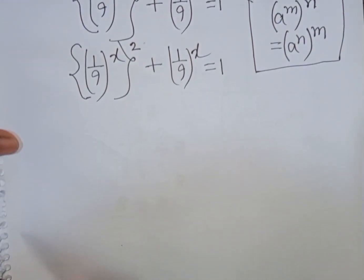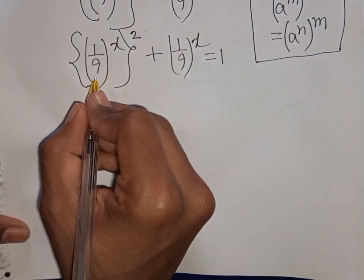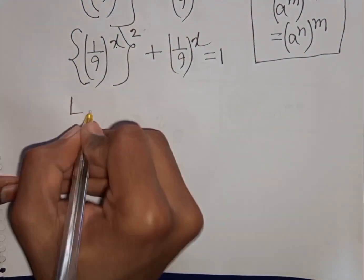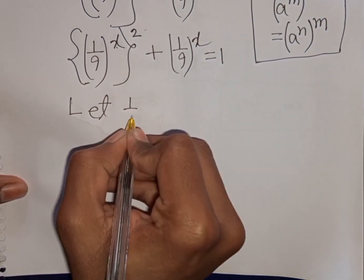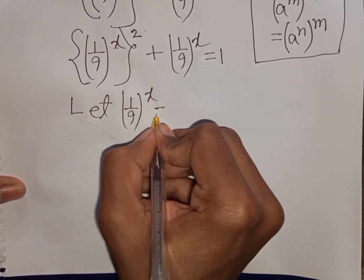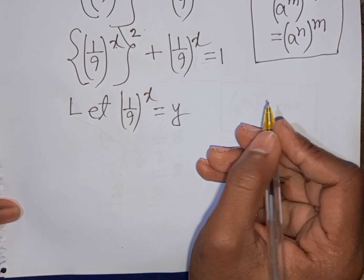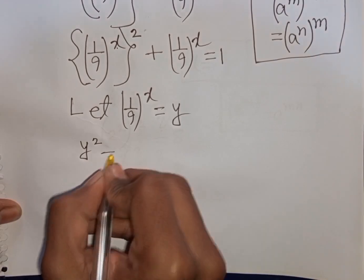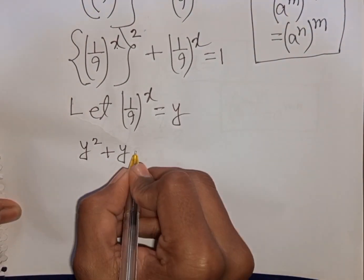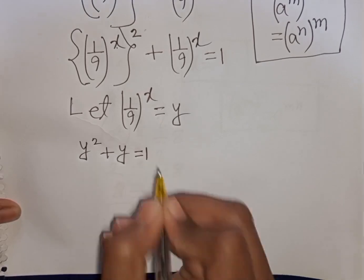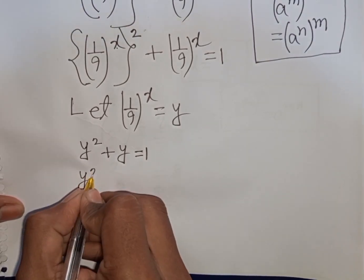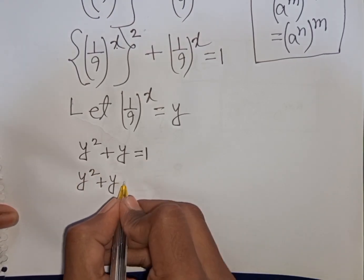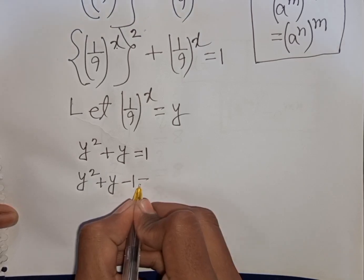Now we see (1/9)^x and (1/9)^x — both terms are the same. So let (1/9)^x be substituted by y. Our equation becomes y^2 + y = 1, or y^2 + y − 1 = 0.